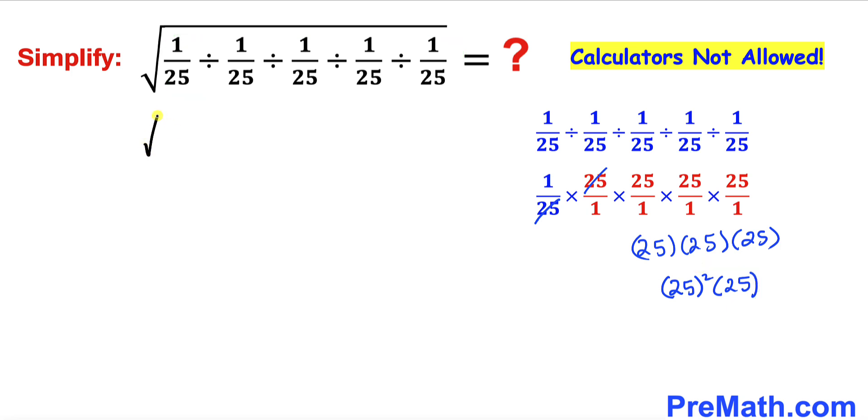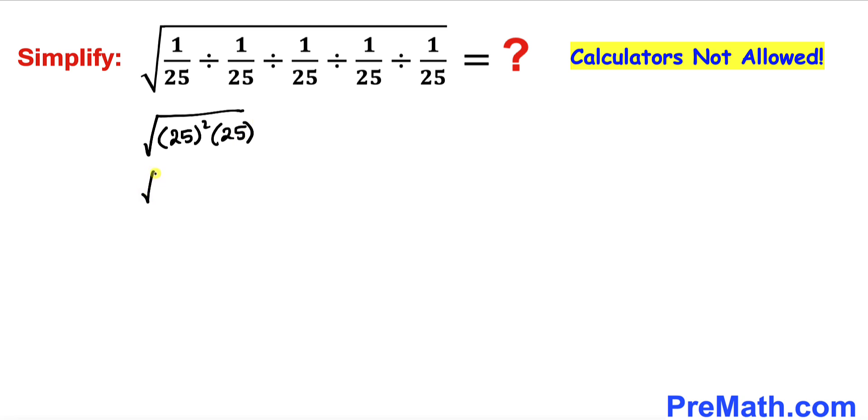Therefore I can write square root of 25 whole square times 25. Now let's go ahead and break it down. We can write this as square root of 25 whole square times square root of 25. Now we can see this square and square root, they undo each other, and we know square root of 25 is simply 5.